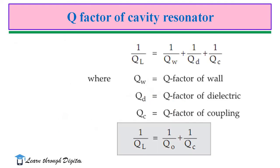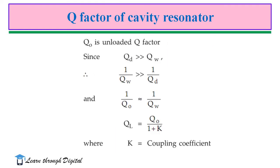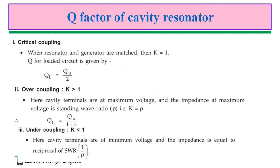From this, we can write: 1/QL = 1/Q0 + 1/QC. Q0 is the unloaded quality factor, since QD is much greater than QW. Therefore, QL = Q0 / (1 + K), where K is the coupling coefficient. There are three values of coupling coefficient: critical coupling, over coupling, and under coupling.